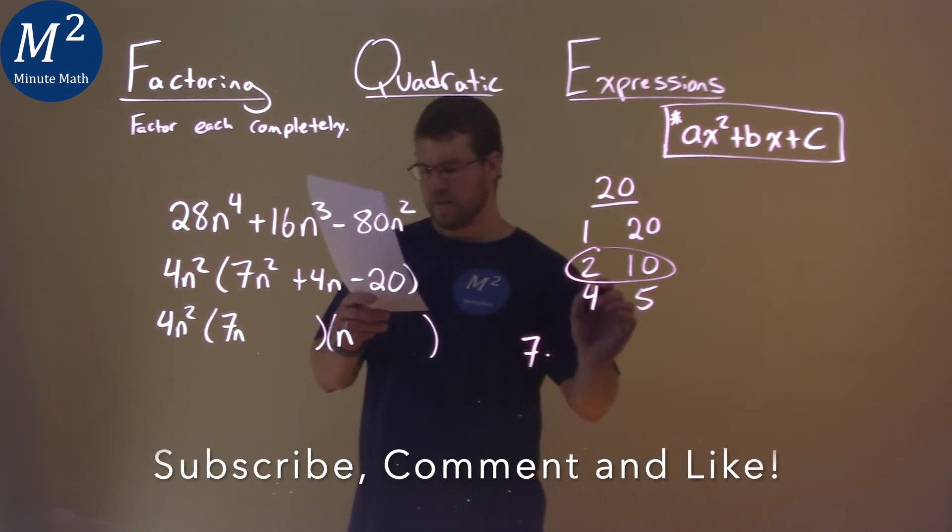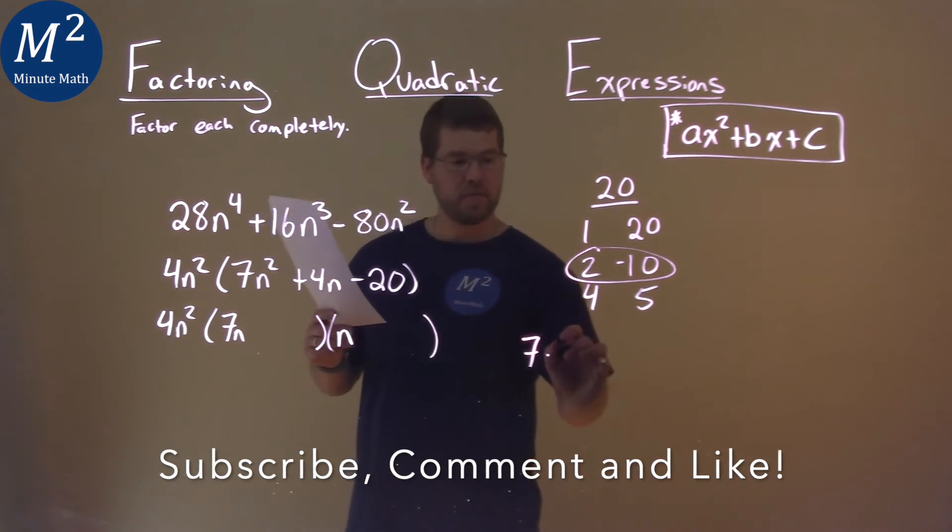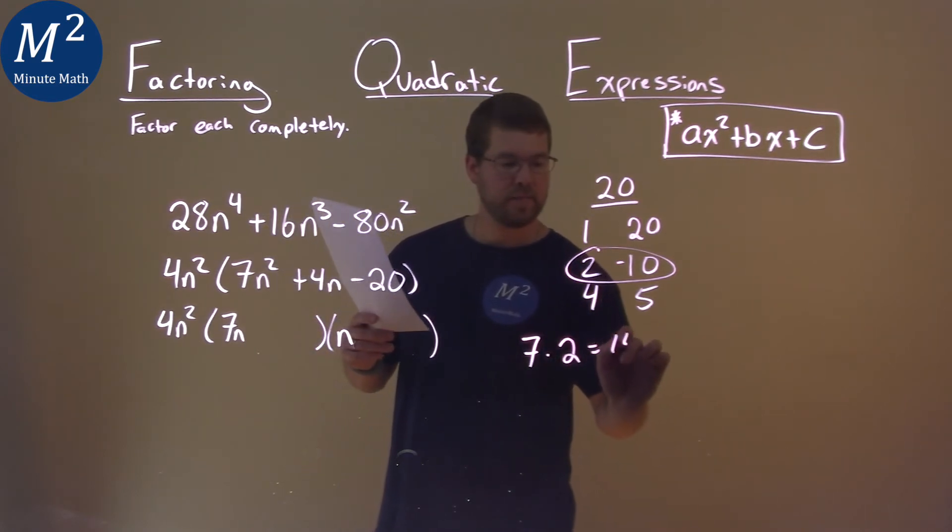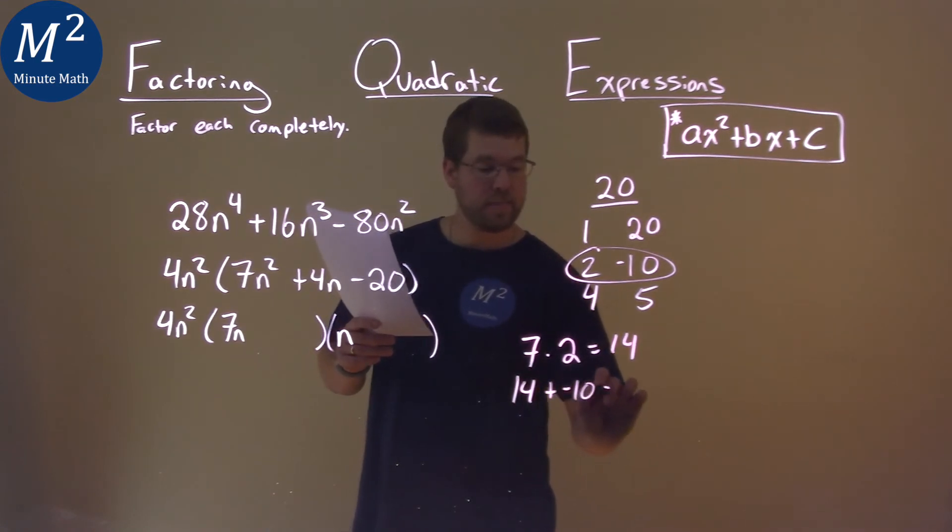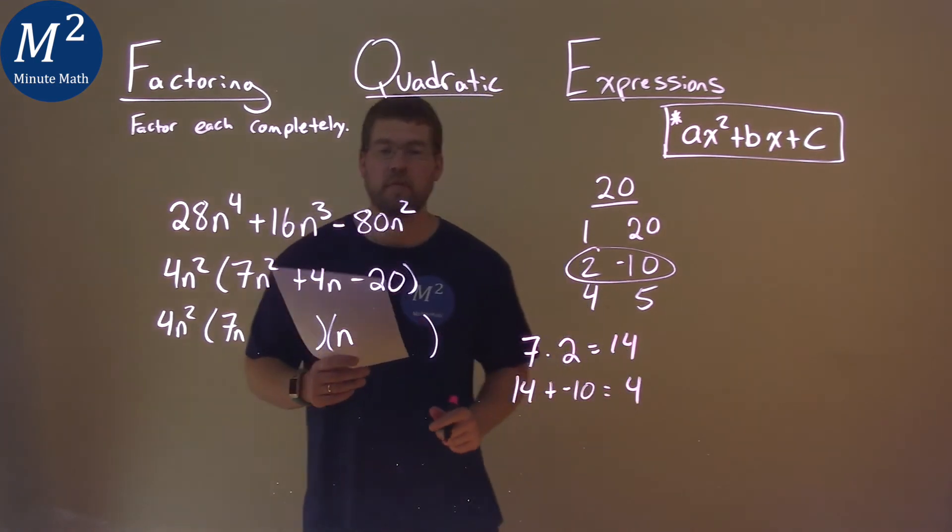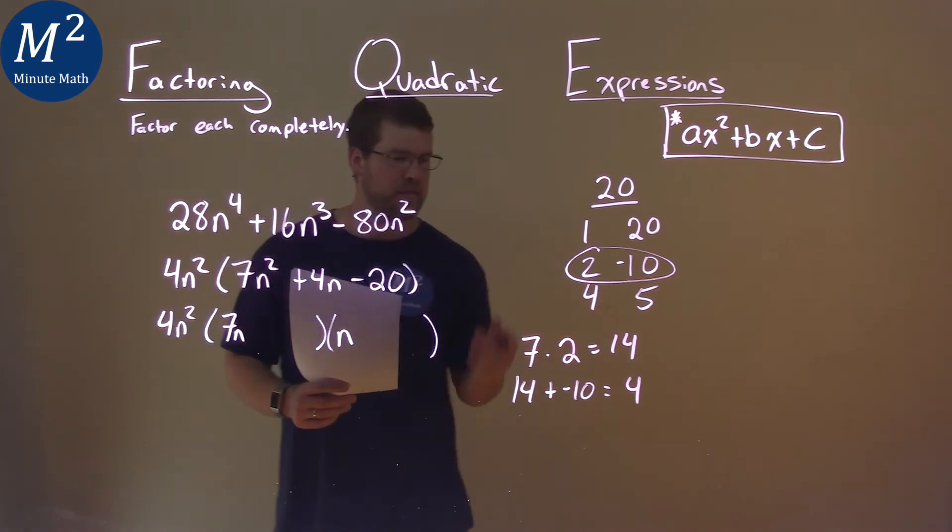7, and it's going to be the negative 10. 7 times a positive 2 is 14. 14 plus the negative 10 equals a positive 4. A lot of times it takes trial and practice to get this down.